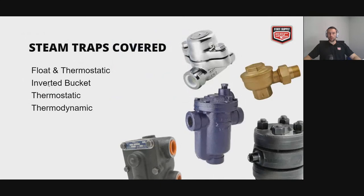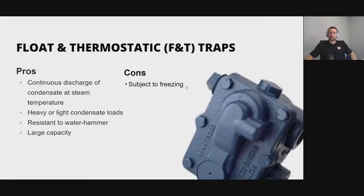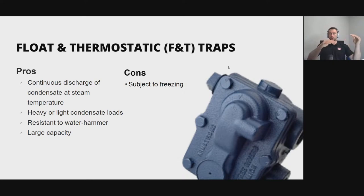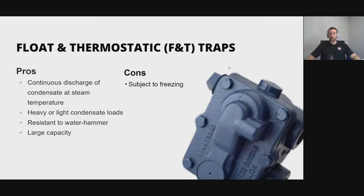The F&T trap has a continuous discharge of condensate — as condensate enters the trap, the ball lifts due to buoyancy and condensate flushes out, so inlet and outlet rates are equal for condensate. These traps can get really large, handling 150 to 200 pounds, and are able to handle a lot of condensate but also work well with a little. They are resistant to water hammer. A con is that they're subject to freezing, but from talking with many people, the F&T trap seems to be the ideal trap for most applications.